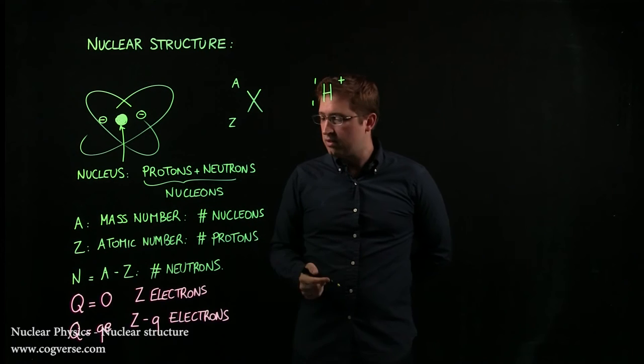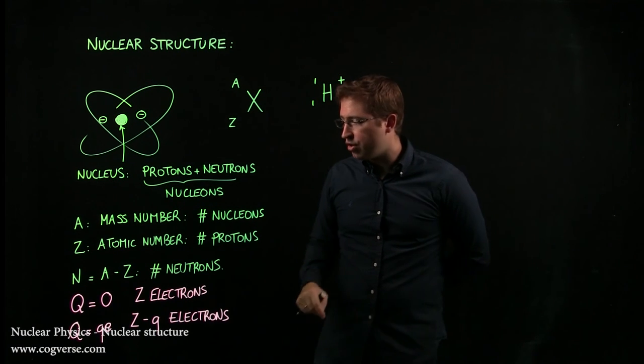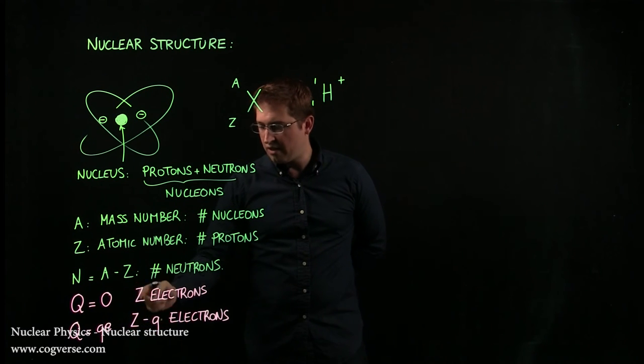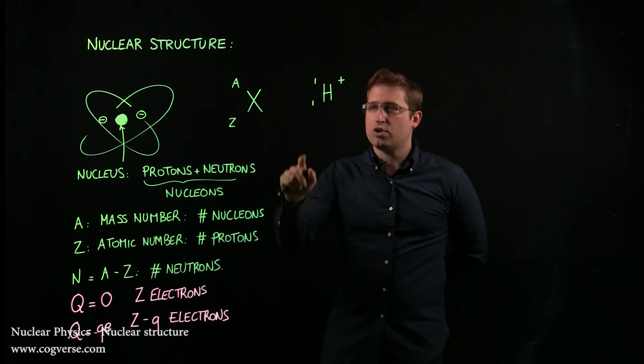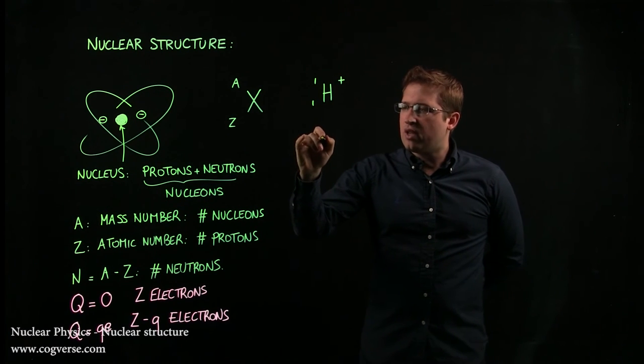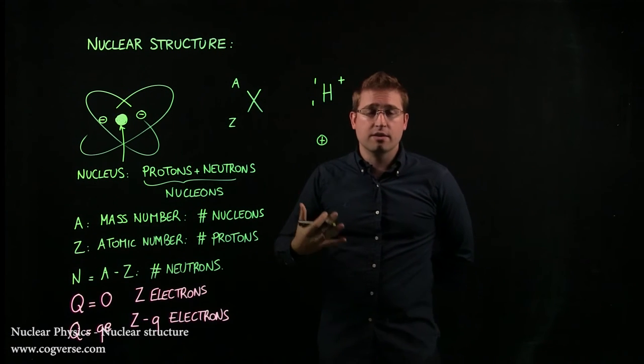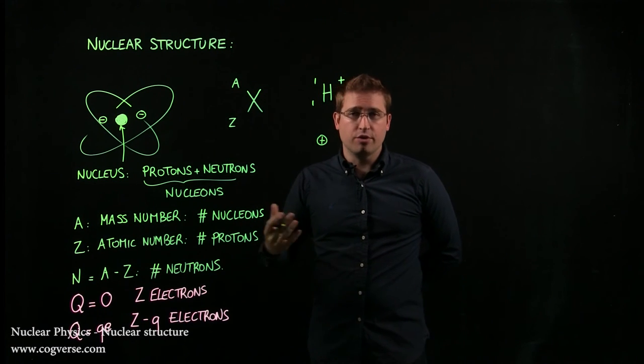And of course, because here we have plus one as a charge, Q is equal to one, and we have Z minus one, which is one minus one electrons—no electrons. And you know that from chemistry; you know that H+ is basically a proton floating around. It lost its only electron, and there are no neutrons.